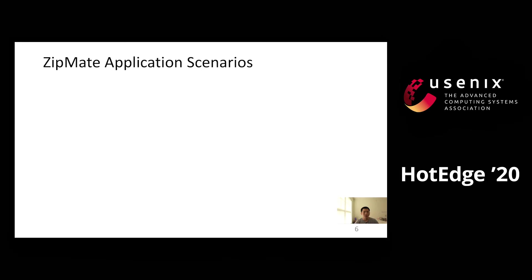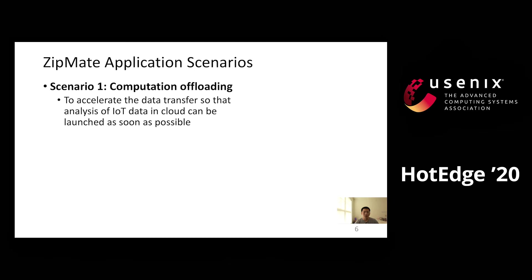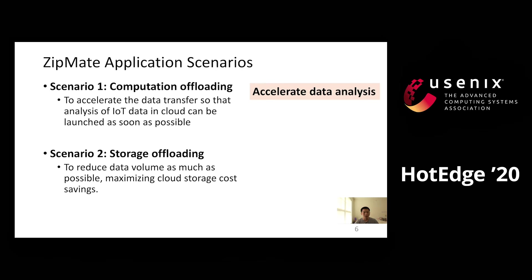When designing ZipMate, we have two application scenarios in mind. The first scenario is computation uploading: IoT data need to be moved from edge servers to cloud servers for deep analysis. In this case, we aim to accelerate data transfer so that analysis of IoT data in the cloud can be launched as soon as possible. The second scenario is storage uploading: IoT data need to be moved from edge to cloud to release storage space or for data archiving. In this case, we aim to reduce data volume as much as possible to maximize cloud storage cost savings.